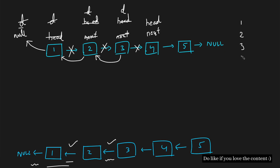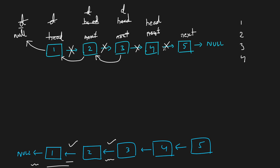In the fourth iteration, the objective is to point 4 to 3. We take our next node and point it to 5. Then we take head's next and point it to the dummy node, breaking the existing pointer. Once done, we take the dummy node and point it to head, then take head and point it to next. The fourth objective is also complete.